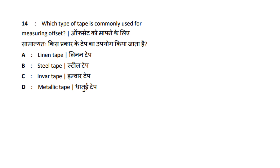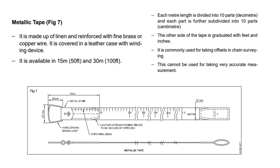First question: Which type of tape is commonly used for measuring offset? For offset measurement, we do not use a plain tape. We do not use a metallic tape initially — let us answer. We use a metallic tape. The metallic tape uses copper wire and forms the metallic tape structure. This tape is available in lengths of 15m, 30m, and 50 to 100 feet.